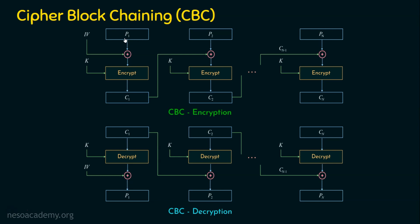In ECB, the plaintext is given to the encryption function along with the key, then it produces the ciphertext. Another block is given to the encryption function with the key, and it gives the other ciphertext. But here in CBC, the ciphertext of the previous block acts as the input for generating the next ciphertext. For generating C2, we need C1 as an input. Before giving it to the encryption algorithm, the current plaintext block is XORed with the previous block ciphertext, and whatever bits result are given to the encryption function with the key, producing the ciphertext.